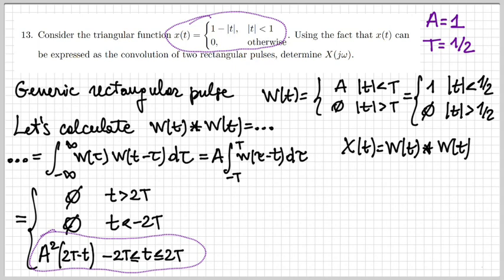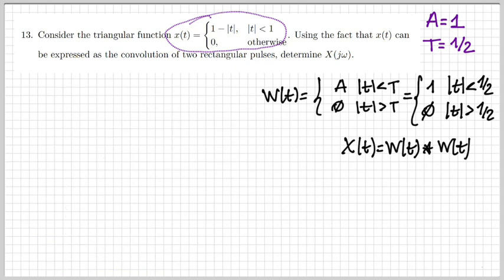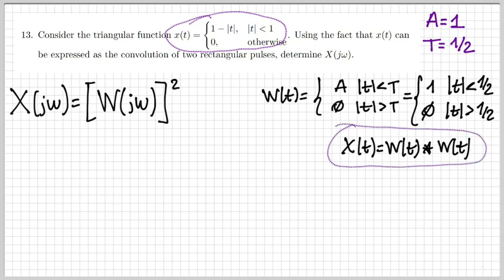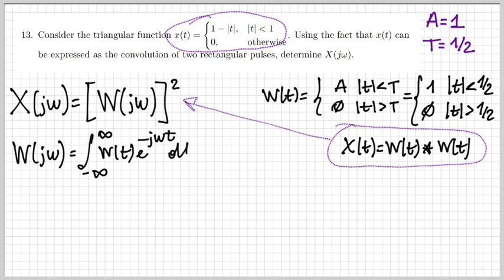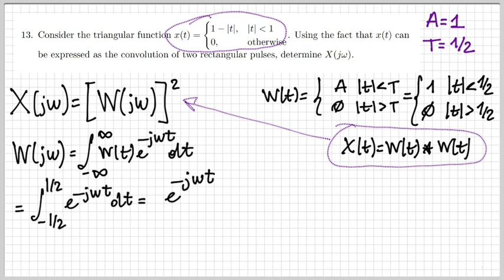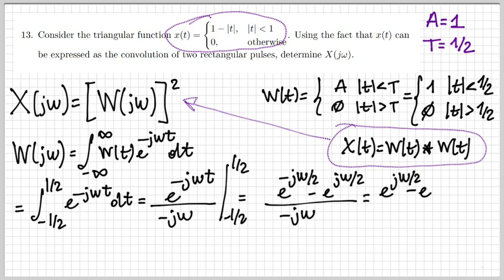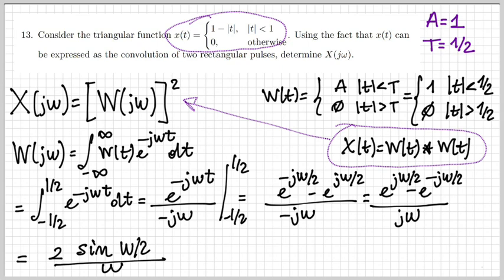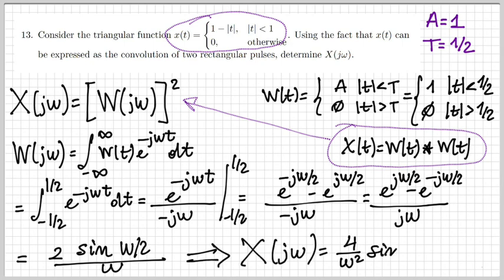So x of t equals W of t convolved with W of t. Now I'm ready to calculate the Fourier transform X(jω). By the convolution property, convolution in the time domain means product in the frequency domain. So X(jω) is simply W(jω)². Calculating W(jω) using the definition — since W is a simple rectangular pulse — the result is a sinc function: 2·sin(ω/2) / ω. Therefore X(jω) is given by the square of this, which can be written as 4 · sin²(ω/2) / ω².